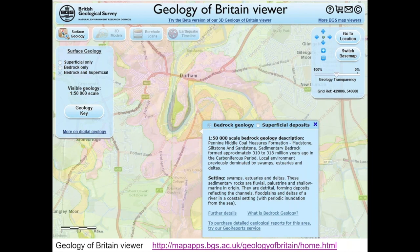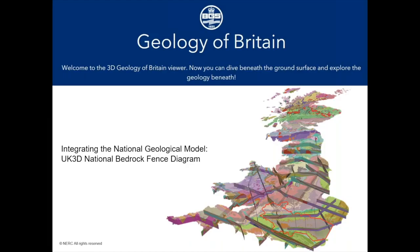The information in the summary box comes from something called the Lexicon — essentially the bible of UK geology, containing an explanation of every single geological lithostratigraphic term used in the UK. There is also a beta version of the Geology of Britain Viewer which incorporates three dimensions. This shows what we call the bedrock fence diagram of the UK — a series of geological cross sections laid across the country which intersect, and which we use to generate a simple three-dimensional geological model of the UK.